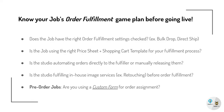Is the studio automating orders directly to the fulfiller, or are you manually releasing them after a quality assurance check? Is the studio fulfilling in-house image services like retouching? Keep in mind that those image services need to be completed before the orders will appear at the lab for printing.